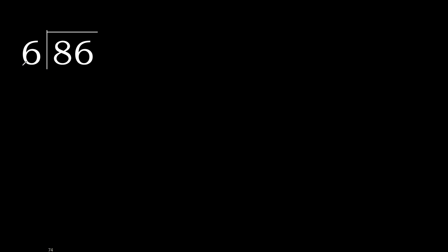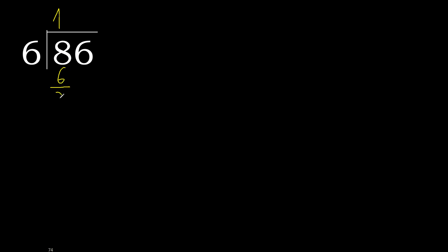86 divided by 6. First, 8 is not less, therefore work with 8. 6 multiplied by which number is nearest to 8 but not greater? 6 multiplied by 2 is 12, which is greater. 6 multiplied by 1 is 6, which is not greater. 8 minus 6 is 2.